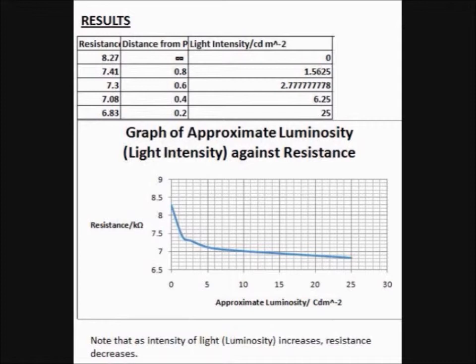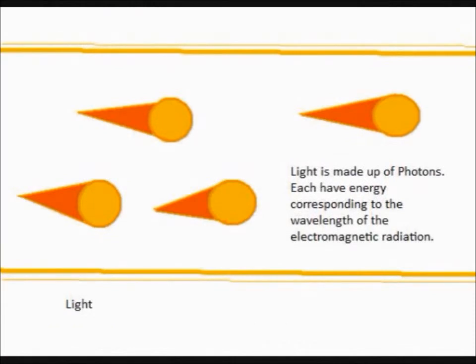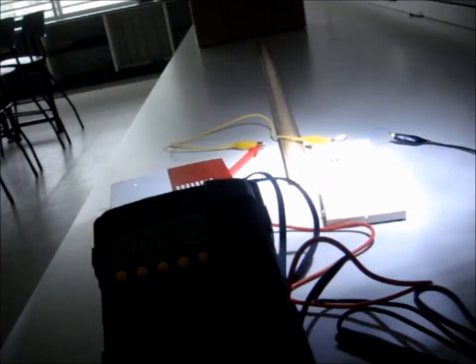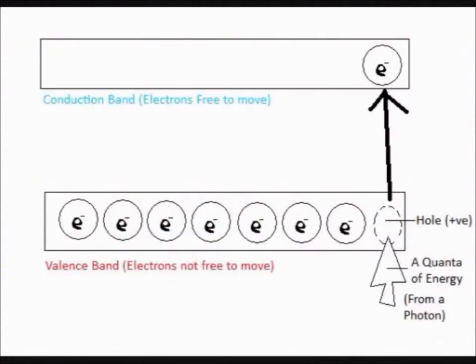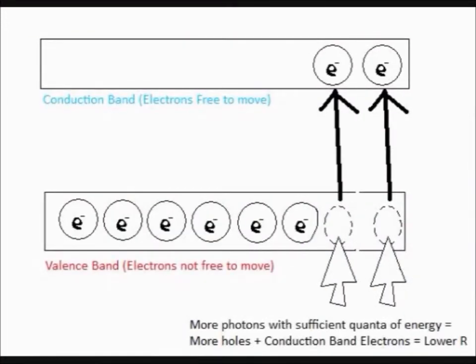As can be seen from both the graph and the experiment, when the light is closer to the photoconductor, its resistance decreases. This is as the light is made out of photons of energy, which each have a quanta of energy. And when the light is shone on the photoconductor, these quanta of energy are provided in the form of photons and excite the valence band electrons to conduction band. More light equals more photons, resulting in lower resistance. This explains why its conductivity increases with light intensity and its resistance decreases with light intensity.